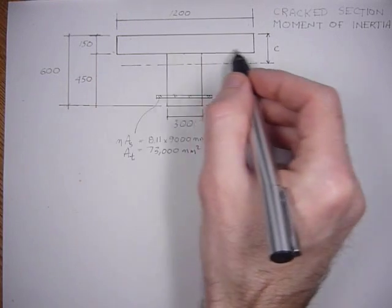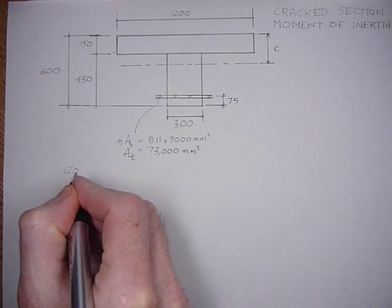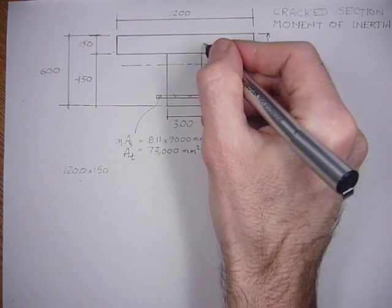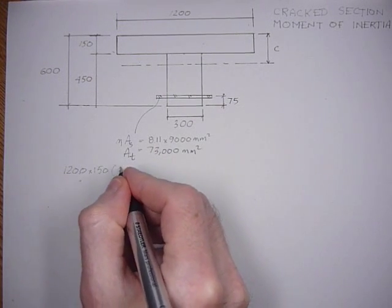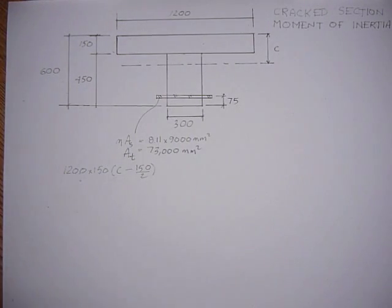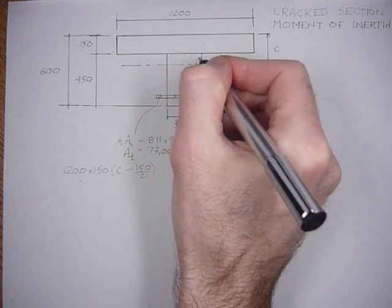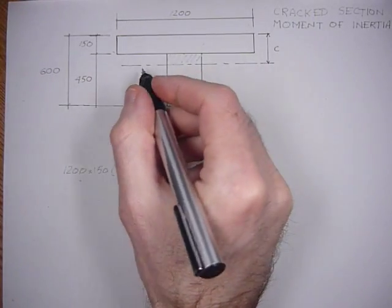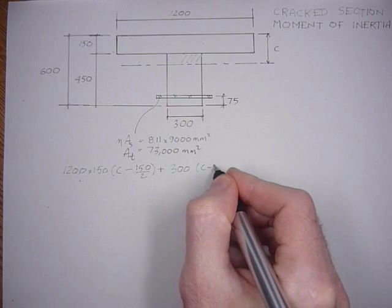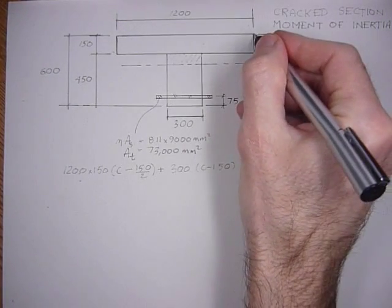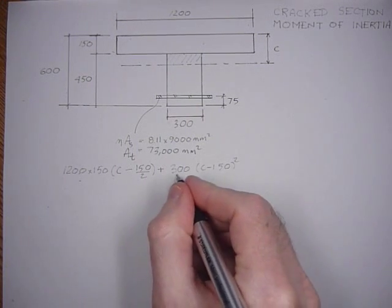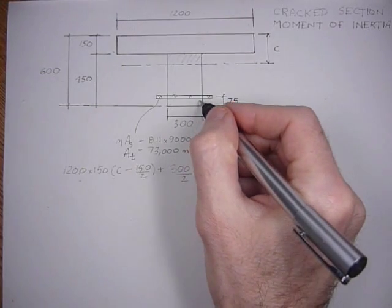The area of the flange is 1200 times 150, times the distance from the neutral axis to the centroid of the flange, which is C minus 150 over 2. Plus this portion of the web: 300 times (C minus 150), times (C minus 150) over 2 — so squared over 2. And that will equal what's below the axis.